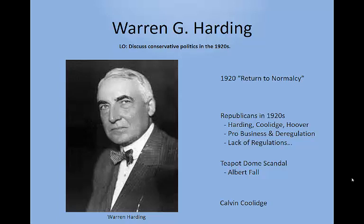Harding's administration was marked by corruption, largely because he appointed business buddies to high office who used their positions for personal profit. The most famous scandal was the Teapot Dome — Teapot Dome was a petroleum reserve on public lands where drilling was illegal. Secretary of the Interior Albert Fall leased these reserves to oil companies in exchange for cash, bonds, and cattle, earning him the distinction of being the first cabinet secretary to go to prison. Harding died in 1923, officially of natural causes, though historical rumor has it his wife poisoned him.